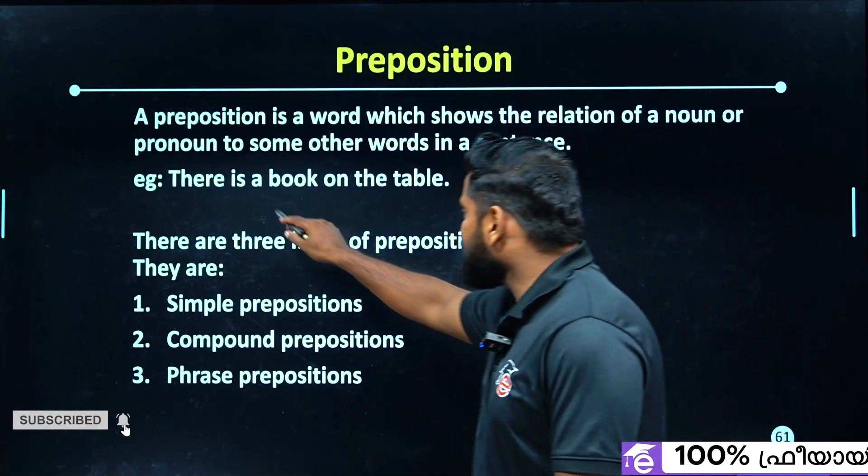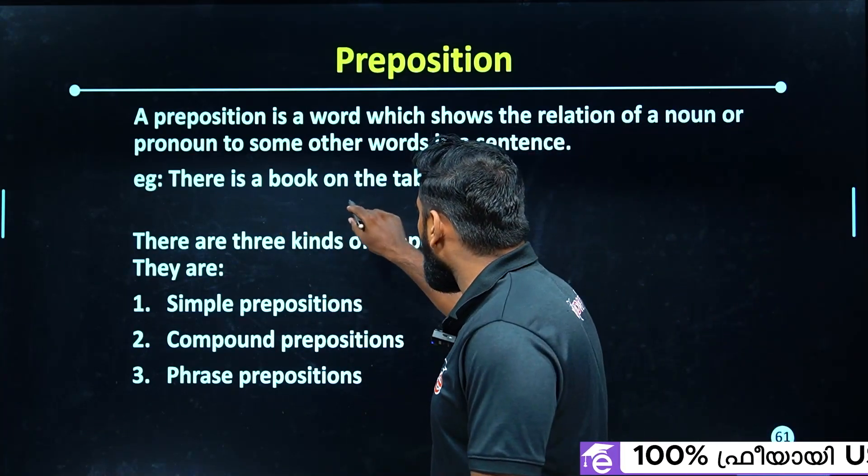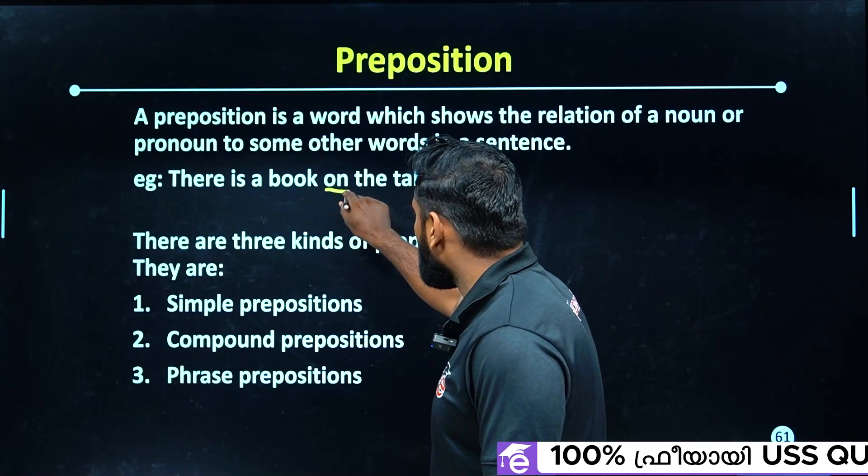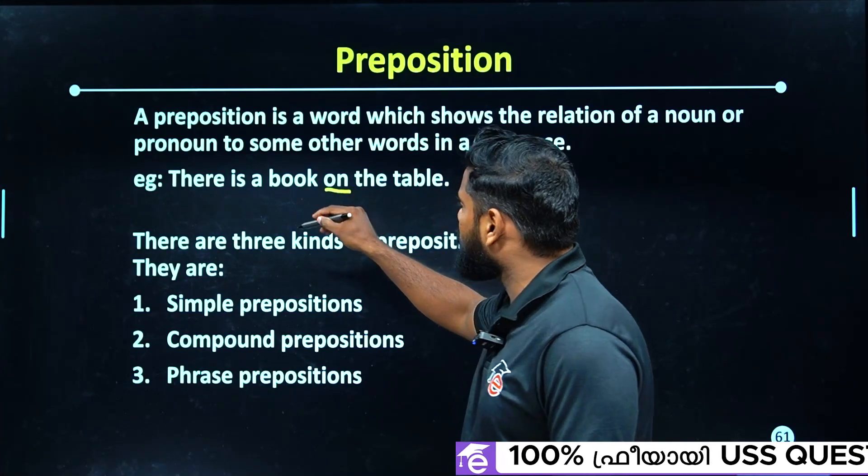For example: there is a book on the table. Here, 'on' is the preposition showing the relation between 'book' and 'table'.